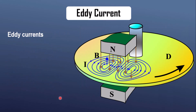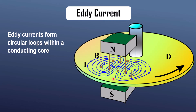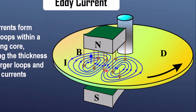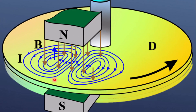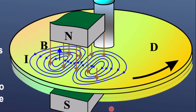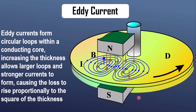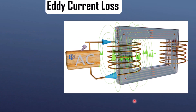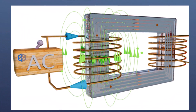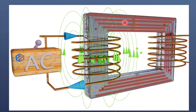Eddy currents form circular loops within a conducting core when exposed to a changing magnetic field. Increasing the thickness of the core allows larger eddy current loops to form, which encounter less resistance. As a result, stronger eddy currents are generated and the associated power loss increases. This loss rises approximately with the square of the core's thickness. These currents encounter resistance as they flow through the core, which dissipates energy as heat.